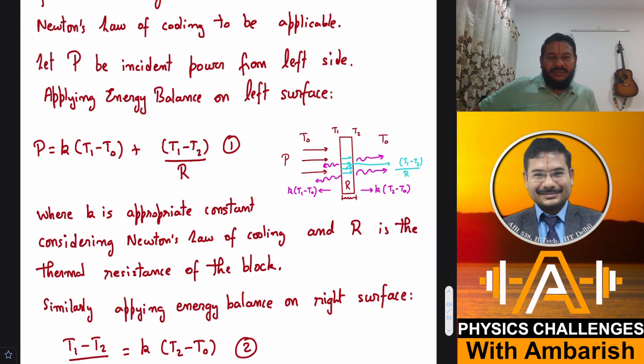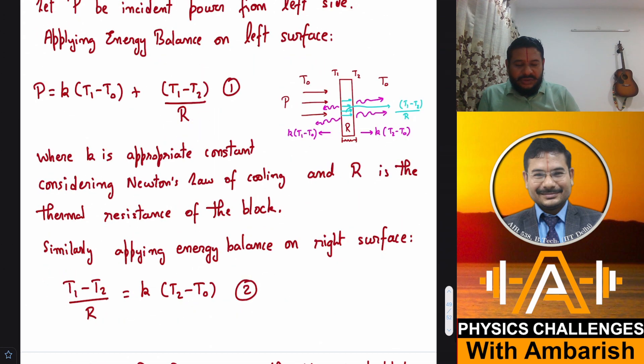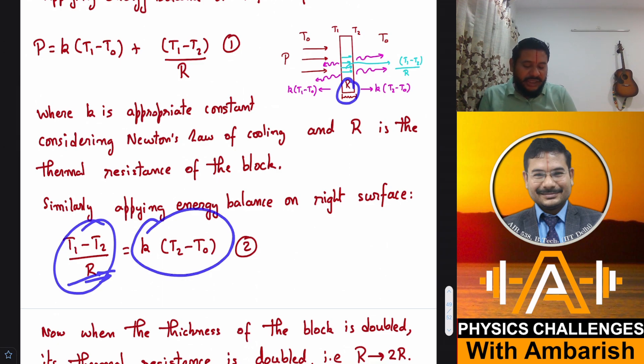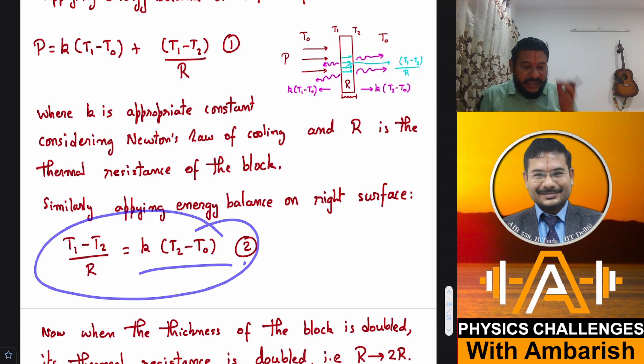Generally in Newton's law of cooling, the constant is written in terms of rate of temperature loss. But we can also write the proportionality in terms of heat loss. So here when I am writing K, it's related to the rate of heat loss and not rate of temperature loss. K is the appropriate constant considering Newton's law of cooling and R is the thermal resistance of the block. Similarly, I can apply the energy balance equation on right hand side.